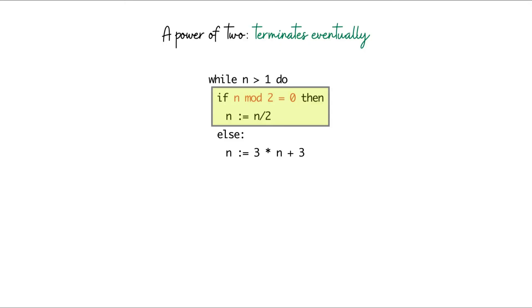We also saw this with the examples. When n was equal to 2, then we terminated after 1 iteration. When n was 4, we terminated in 2. And when n was 8, we terminated in 3 iterations. So this case is abundantly clear.